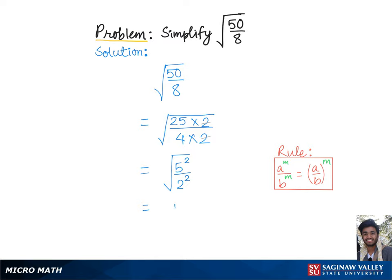Now this, according to the rule of exponent, can be written as 5 over 2 as a whole squared under square root. Since we have a perfect square under square root, this can simply be written as 5 over 2, which is the final answer.